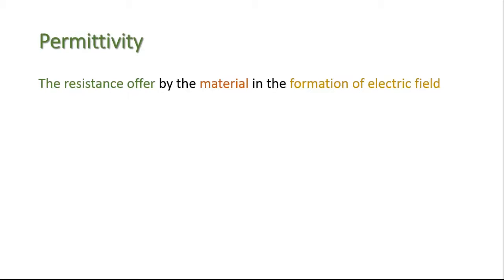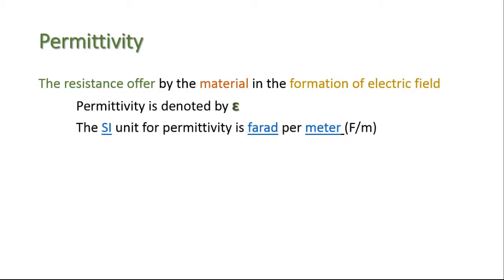Permittivity is defined as the resistance offered by the material in the formation of electric field. Permittivity is denoted by epsilon. The SI unit for permittivity is farad per meter.